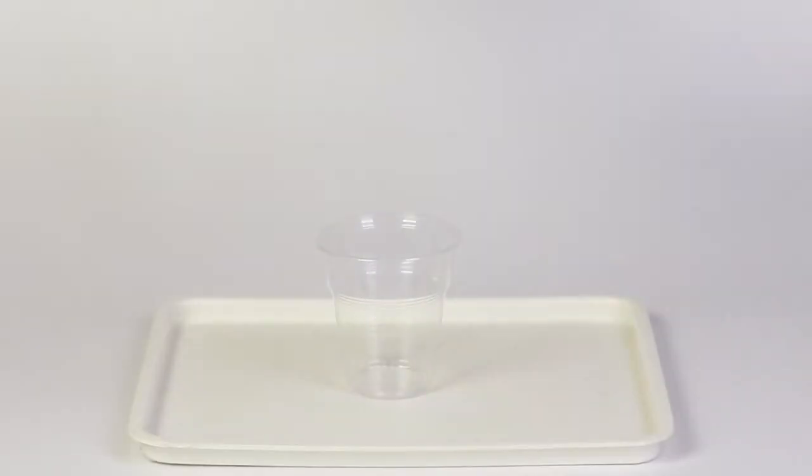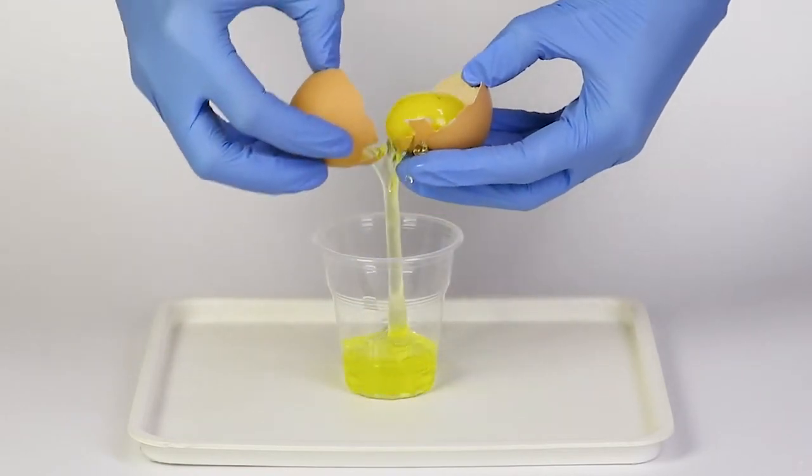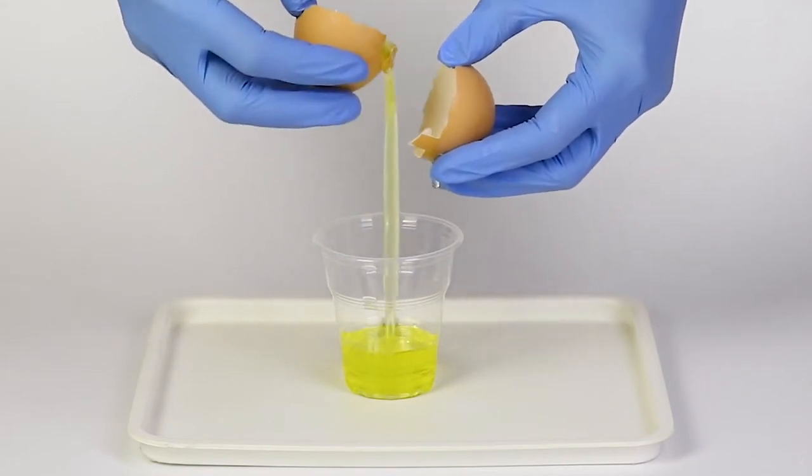First, you must crack the egg and separate the yolk from the egg white. Now, take a disposable cup and pour the egg white into it.